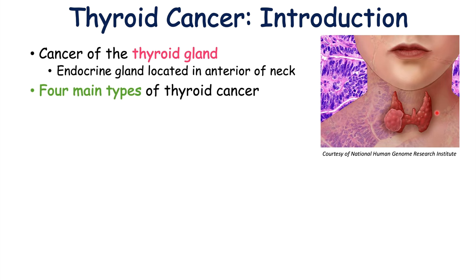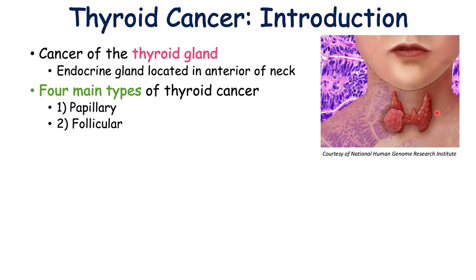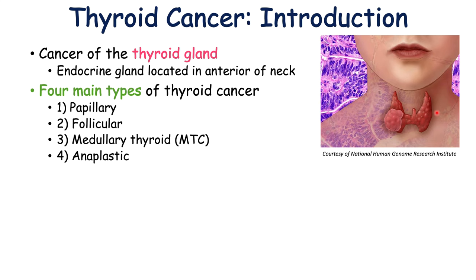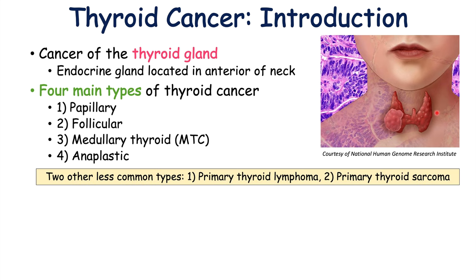There are four main types of thyroid cancer or thyroid carcinoma: papillary, follicular, medullary thyroid carcinoma or MTC, and anaplastic. We're going to talk about these four main types in more detail. Although there are four main types of thyroid cancer, there are also two other less common types — primary thyroid lymphoma and primary thyroid sarcoma.